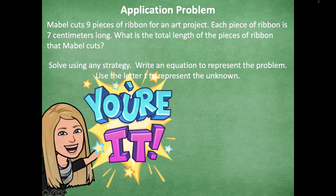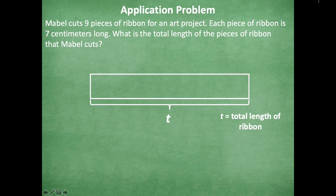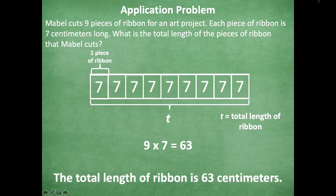All right, friends, make sure you click pause if you need more time. Otherwise, here we go. I drew a tape diagram to help me. I know that T is for the total length — I don't know that yet, I have to solve for that. But what I do know is that there are nine pieces of ribbon and each piece is seven centimeters. So I drew my tape diagram into nine separate parts, and I know that each one is seven centimeters. Nine times seven equals 63, so the total length of the ribbon is 63 centimeters. We're going to take what we just thought about and use it for our concept development today.